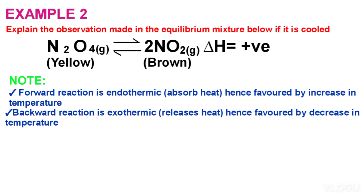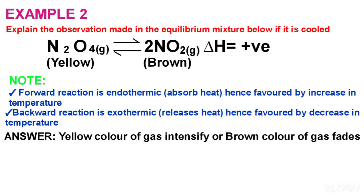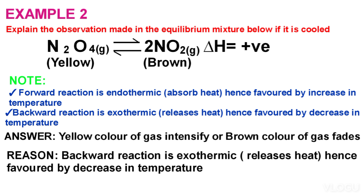So the answer to our question: since the mixture is cooled, that means a decrease in temperature. The answer is: the yellow colour of gas intensifies, or the brown colour of gas fades. The reason is the backward reaction is exothermic, hence favoured by a decrease in temperature. Or you can say equilibrium shifts from right to left because a decrease in temperature favors the direction that releases heat (exothermic reaction).